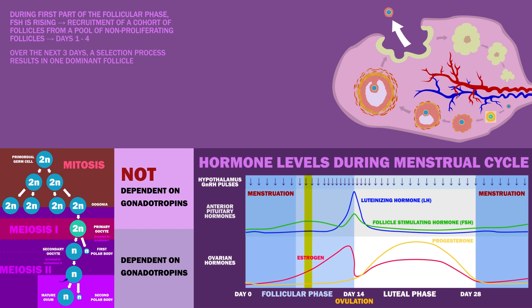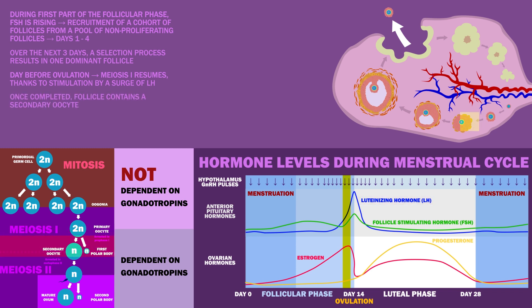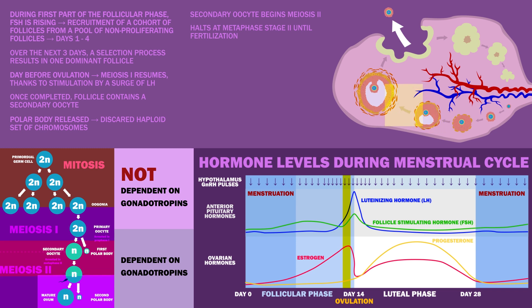By day 7 or 8, this dominant follicle is promoting its own growth and suppressing the maturation of other follicles. The day before ovulation, meiosis I resumes thanks to stimulation by a surge of LH. Once completed, the follicle contains a secondary oocyte. The first polar body is now released, which serves to discard a haploid set of chromosomes. The secondary oocyte, which is haploid, now begins meiosis II, halting at metaphase stage 2 until fertilization. At this stage, it becomes what's known as a graafian follicle. Should the egg be fertilized, a second polar body will be released.